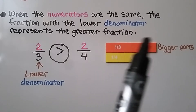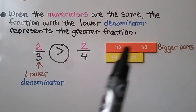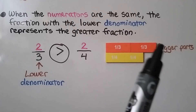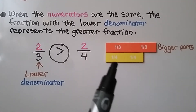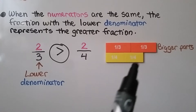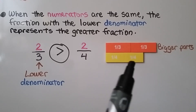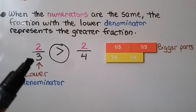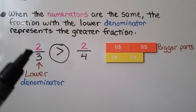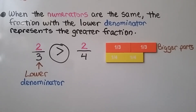Here we have two one-third parts — that's two-thirds — they're bigger parts. We have two one-fourth parts — that's two-fourths — they're smaller parts. This is the lower denominator, so two-thirds is greater than two-fourths.